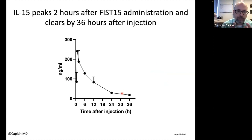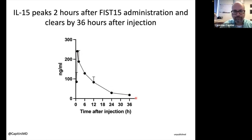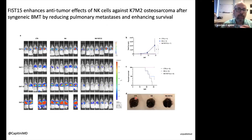We had to first establish a dosing curve for FIS-15. We injected a healthy mouse and measured the pro-inflammatory IL-15 in serial intervals. It peaks about two hours after injection, and the animal clears it by 36 to 48 hours. That led us to a dosing regimen of giving FIS-15 about every other day after the NK cell injection.